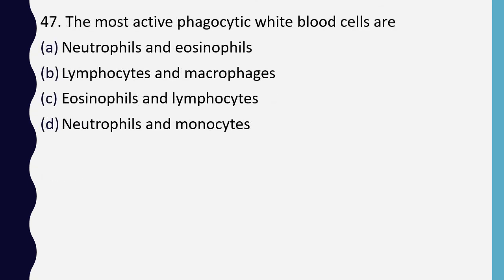Question 47. Most active phagocytic white blood cells are: neutrophils and eosinophils; lymphocytes and macrophages; eosinophils and lymphocytes; or neutrophils and monocytes. The correct answer is option D: neutrophils and monocytes.